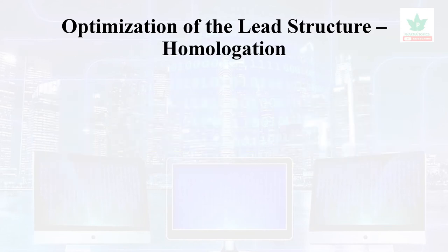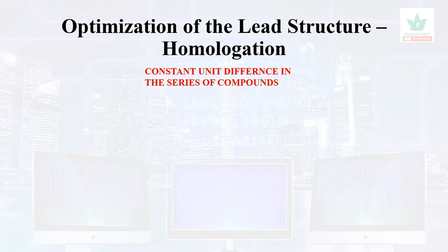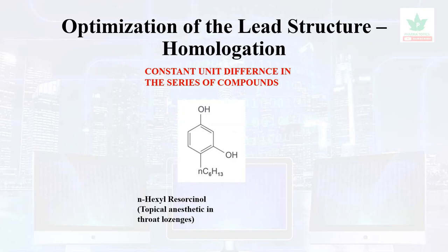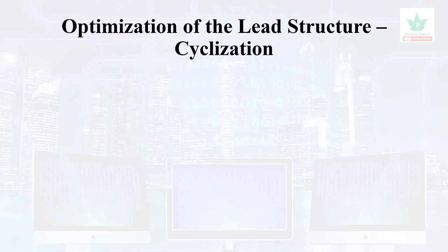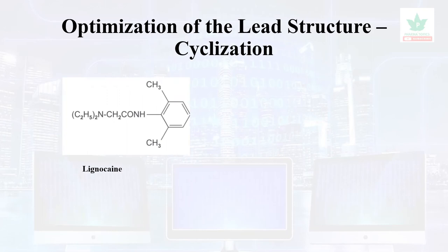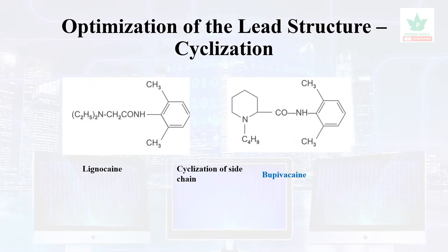Homologation is a method of optimization in which there is a constant unit difference in a series of compounds. For example, n-hexylresorcinol is used as a topical anesthetic in throat lozenges, whereas n-octylresorcinol exhibits hypnotic activity. Cyclization is another method for optimization of lead structures — when side chain cyclization was performed on lignocaine, it gave rise to a more potent local anesthetic called bupivacaine.